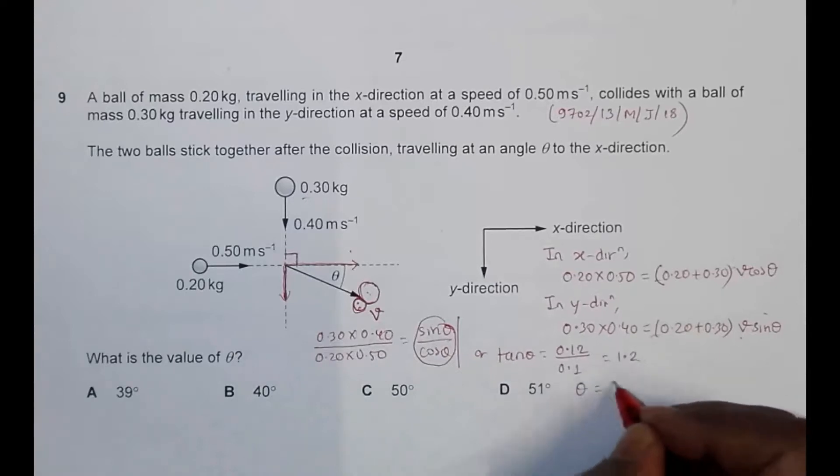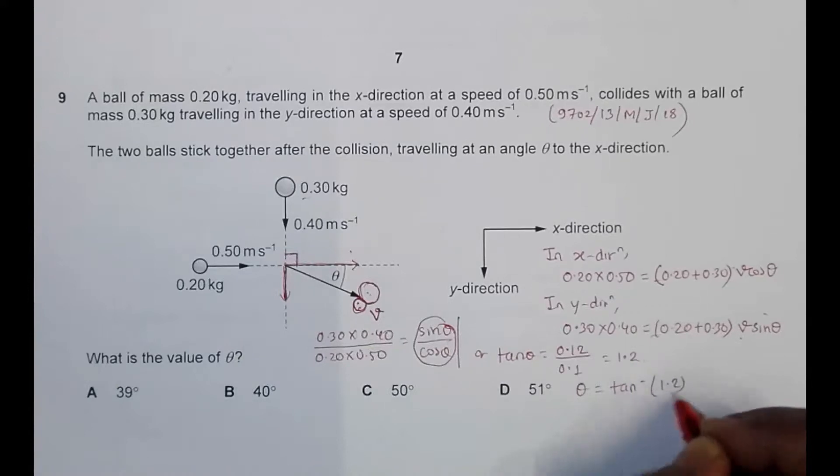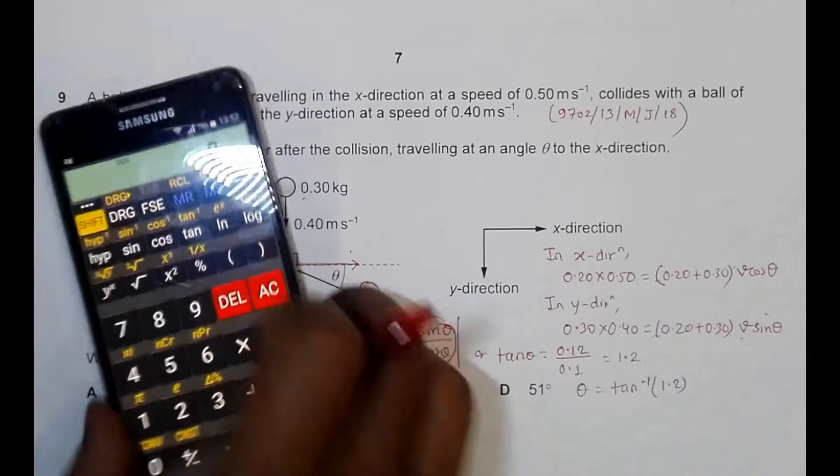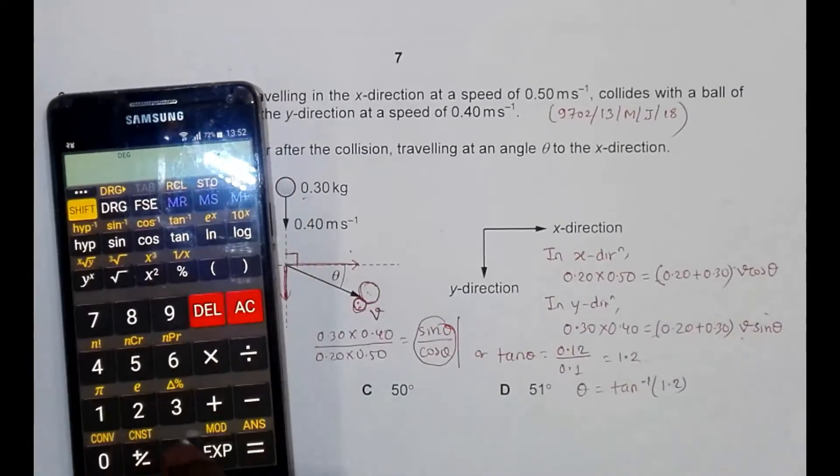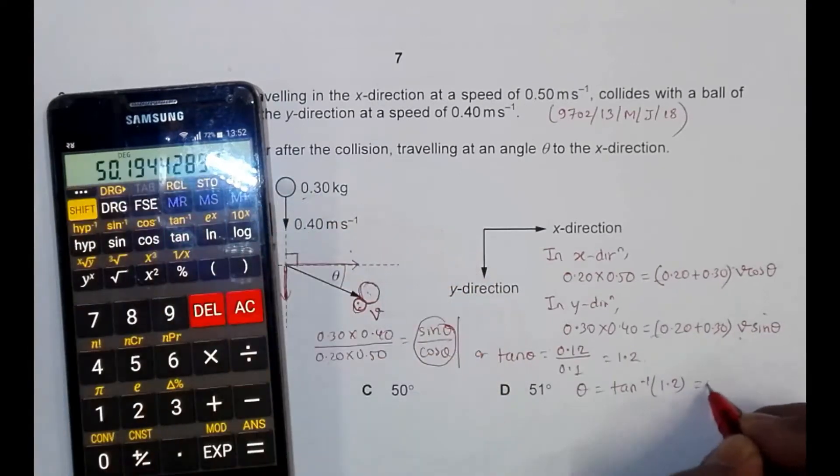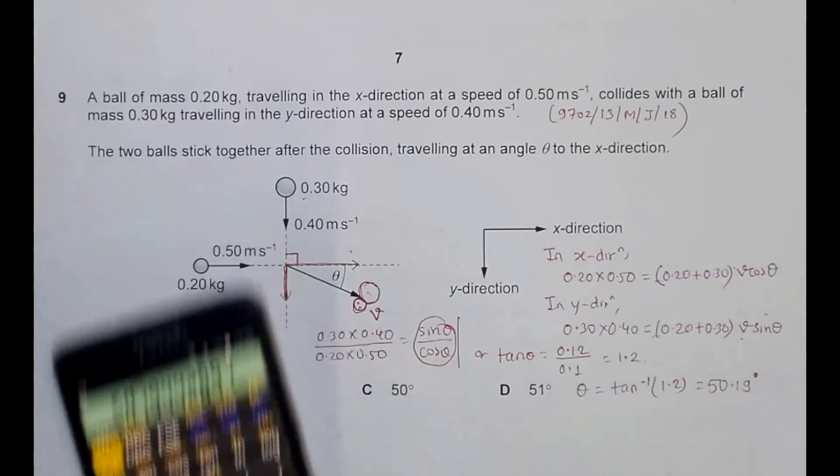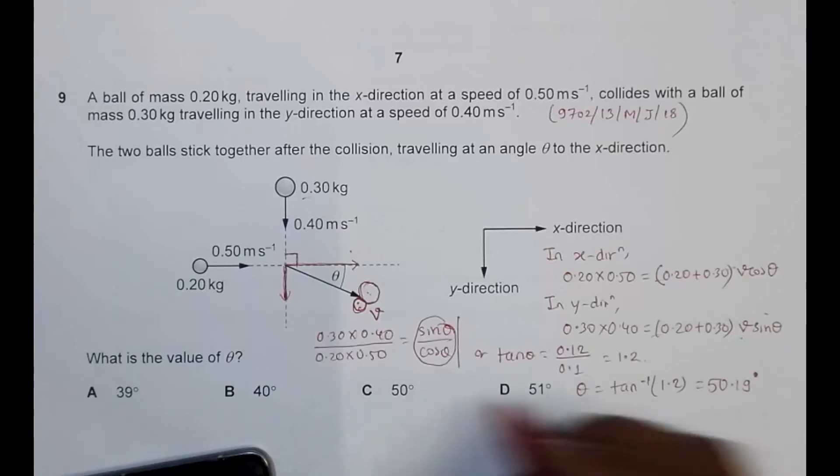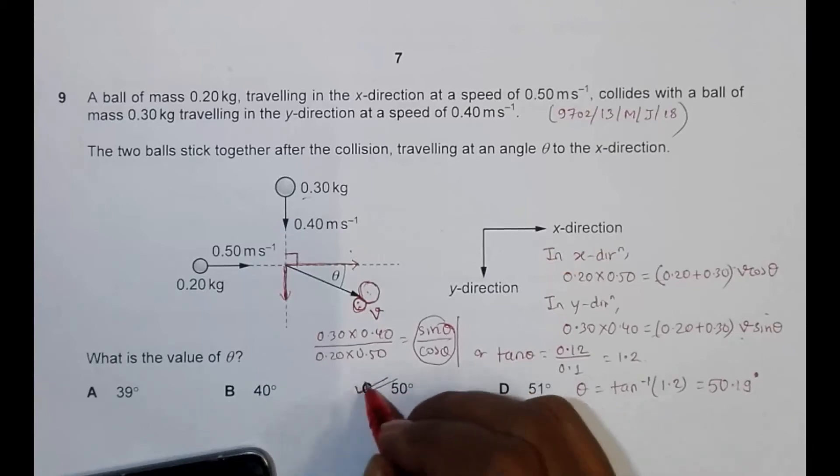So this gives us theta equals tan inverse 1.2. If I use a calculator, 1.2, shift, tan inverse equals 50.19 degrees. And the answer choice which resembles this is 50 degrees, which is choice number C.